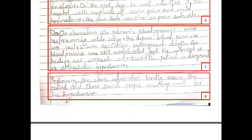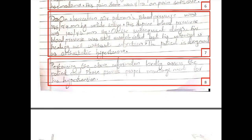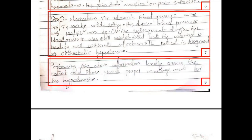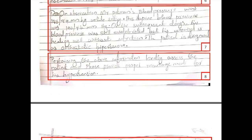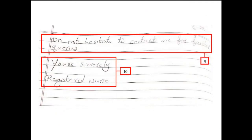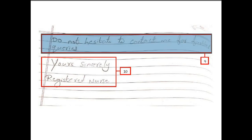Moving to the fourth paragraph: 'Pertaining the above information, kindly assess the patient and please provide proper management for his hypertension.' You can instead simply say: 'I humbly request your attention on this case' or 'please do the needful and contact me if you have any queries.' Coming to the wind-up sentence, you have to mention the name of the patient: 'Do not hesitate to contact me for further queries regarding Mr. Pittman.' In the sign-off, the candidate has missed a comma after 'Yours sincerely.' Considering all these factors, the letter will score 180. Thank you.